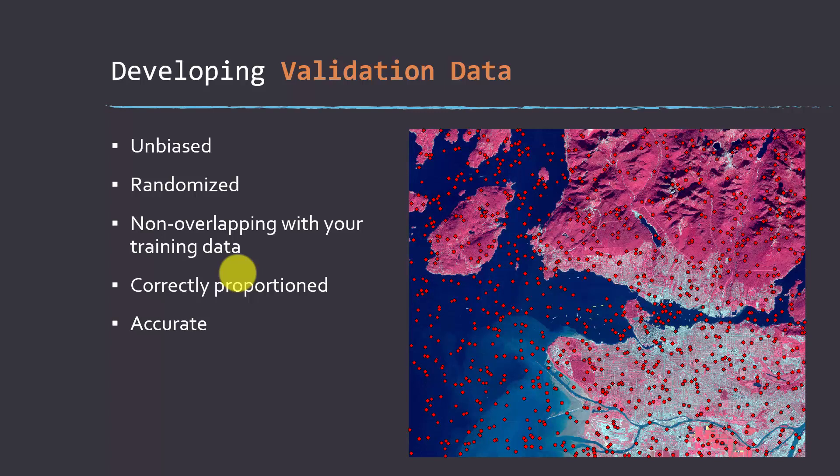And then lastly, they should be accurate. So in remote sensing and geospatial sciences, we try not to use the term ground truth anymore because ground truth implies that it's fact. But all data are going to have some error associated with them. So instead, we talk about things like validation or test data. So the assumption is that they're much more accurate than the map or the prediction that you're trying to assess, but they're probably not 100% right. So quality training data and quality validation data are key in this process.